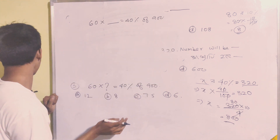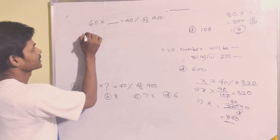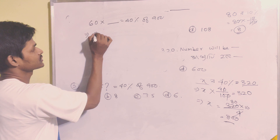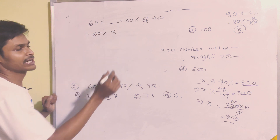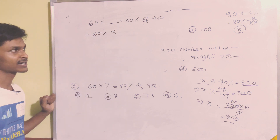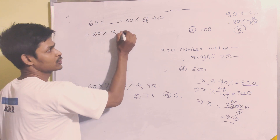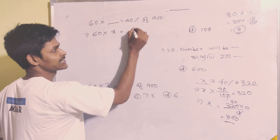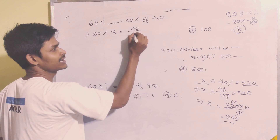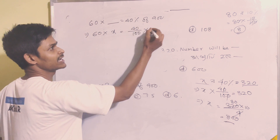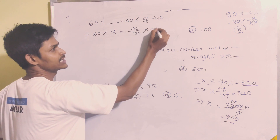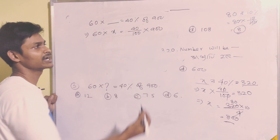Next: 60 into x equals 40 percent, meaning 40 by 100, and 'of' means multiply, into 900.